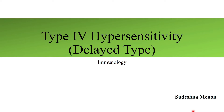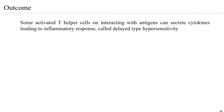Type 4 hypersensitivity is also called delayed type hypersensitivity. It is attributed to cell-mediated immunity — you can have humoral as well as cell-mediated immunity giving rise to type 4 hypersensitivity, but more so it is cell-mediated. It is called delayed type because it takes some time before you actually see an immune reaction. Learning outcomes: some activated T helper cells, on interacting with antigens, can secrete cytokines leading to an inflammatory response called delayed type hypersensitivity.